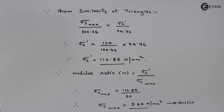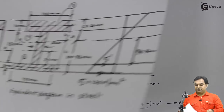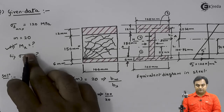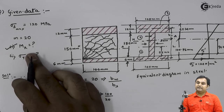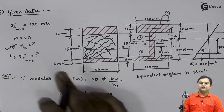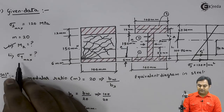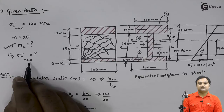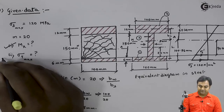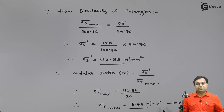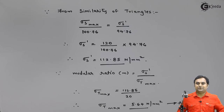To summarize: the question asked us to calculate two things. First, the moment of resistance — the answer is 14.23 kN·m. Second, the maximum stress in timber — the answer is 5.64 N/mm². With this, we complete the question.